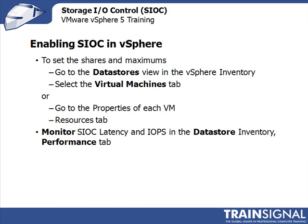To set SIOC shares and maximums, you can go to the datastore view in the vSphere inventory and select the Virtual Machines tab, or go to the properties of each virtual machine and then to the Resources tab. You can monitor SIOC latency and IOPs in the datastore inventory's Performance tab. Now let's go to the vSphere client to see how to enable Storage I.O. Control, configure shares and maximum IOPs, and monitor performance.